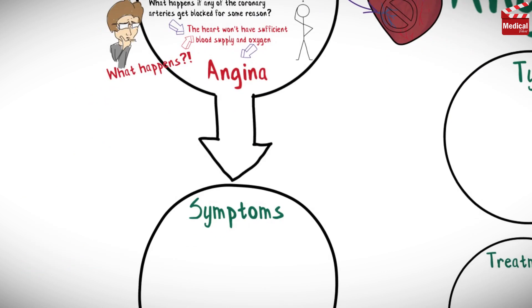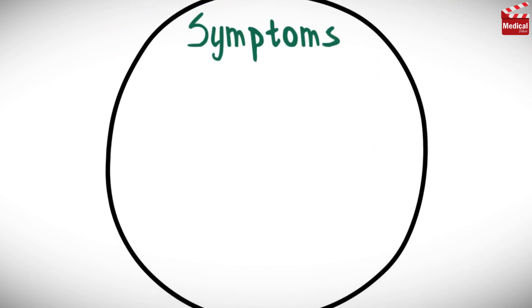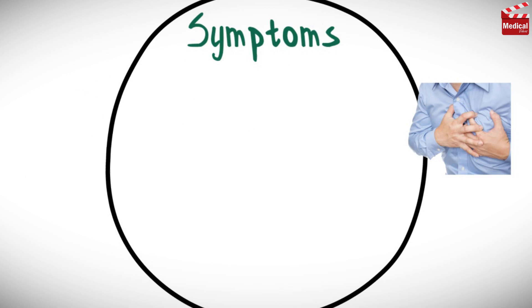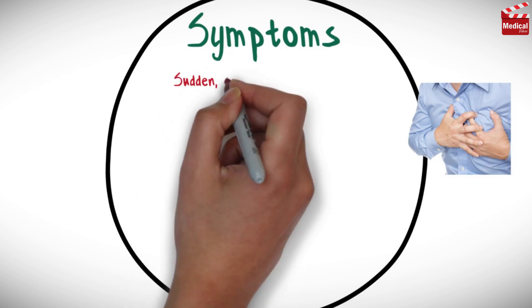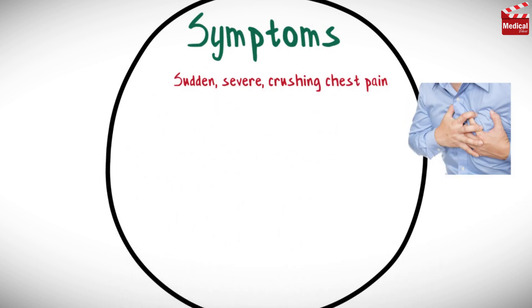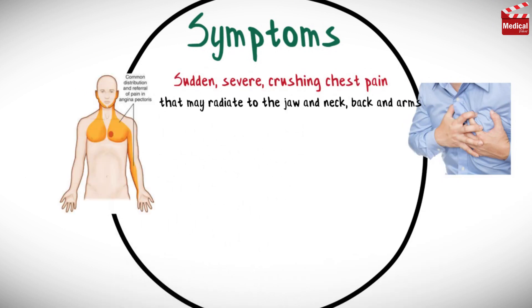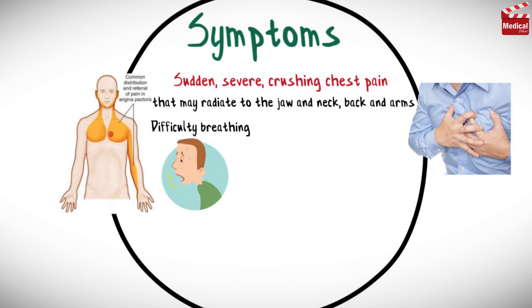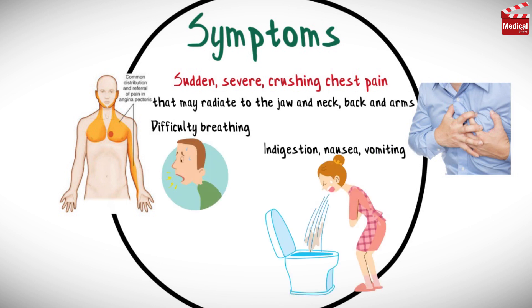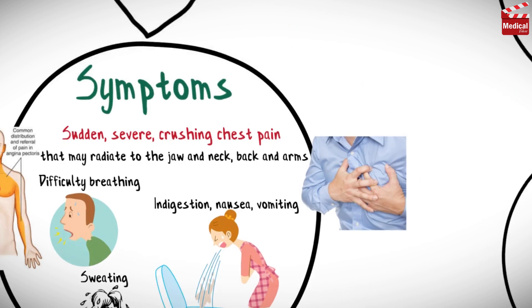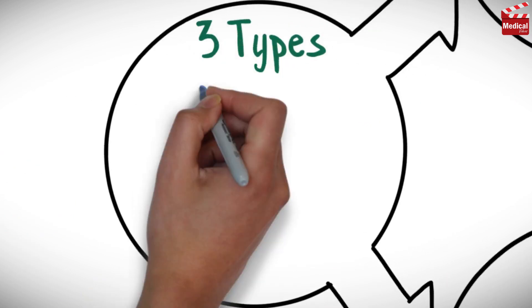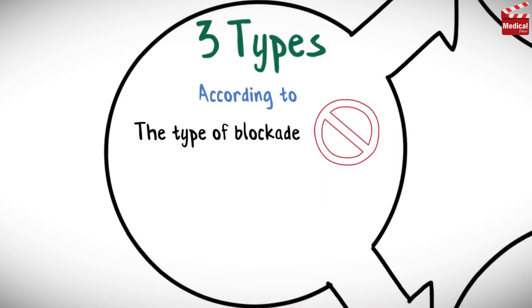When the heart doesn't receive enough blood, that leads us to the symptoms of angina. Typical angina pectoris is characterized by a sudden, severe, crushing chest pain that may radiate to the jaw, neck, back, and arms. Patients may also suffer from difficulty breathing, or atypical symptoms such as indigestion, nausea, vomiting, or sweating.